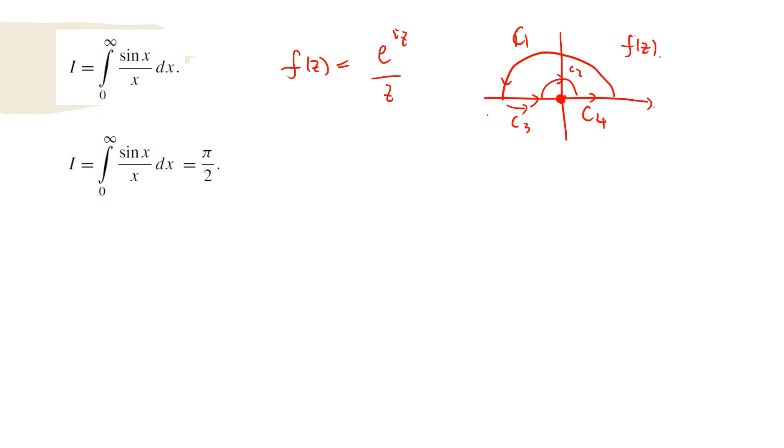So now from Cauchy's theorem, we know that c1 plus c2 plus c3 plus c4 is 0.